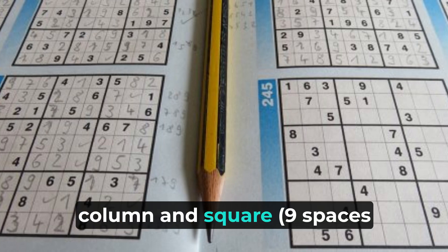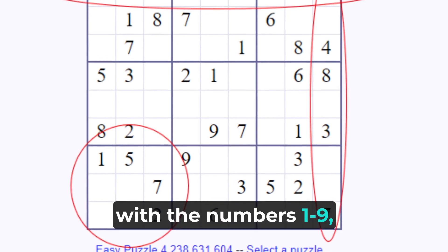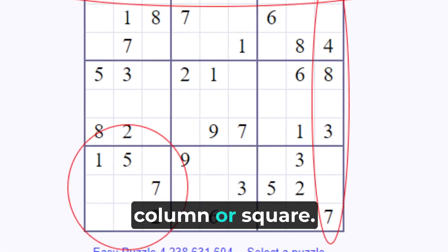Each row, column and square, nine spaces each, needs to be filled out with the numbers one to nine, without repeating any numbers within the row, column or square.